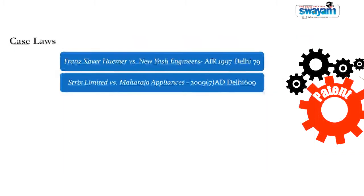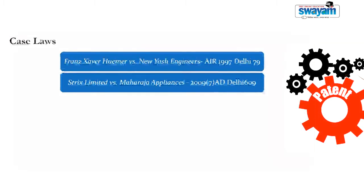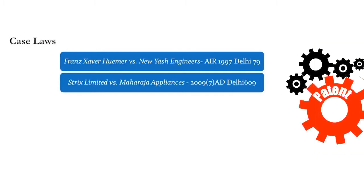Does this mean it is impermissible for a defendant to raise grounds not available under section 107 or section 64? No. Should the defendant place reliance on issues or facts which go beyond section 107, it is possible for the defendant to place combined reliance on section 107 and those aspects foreign to section 107. What this simply means is that if the defendant chooses to invoke section 107 alone, he cannot introduce grounds or facts alien to section 64. However, if he uses section 107 as one of the defenses available in a suit for infringement, he can also use grounds not available under section 64.